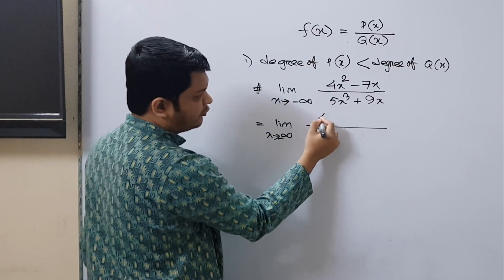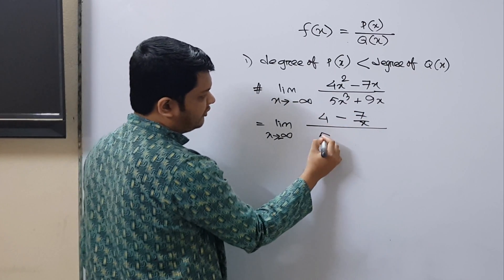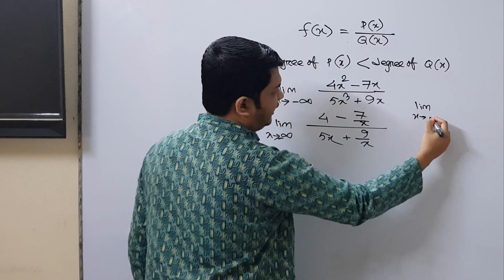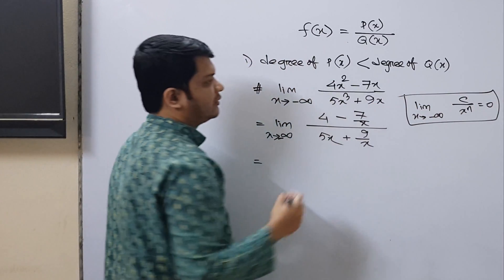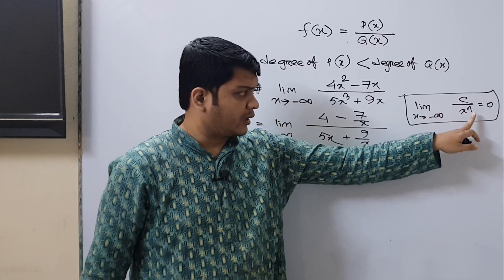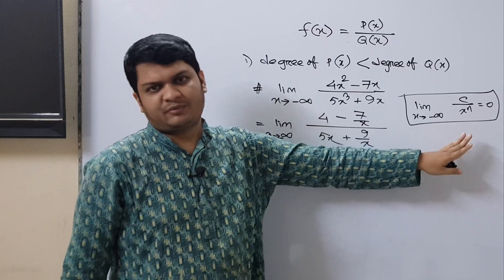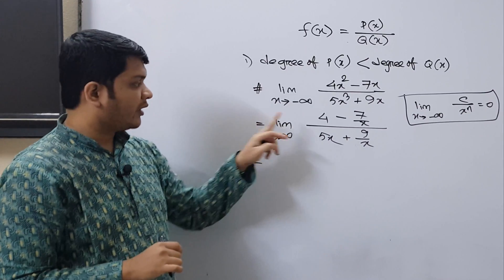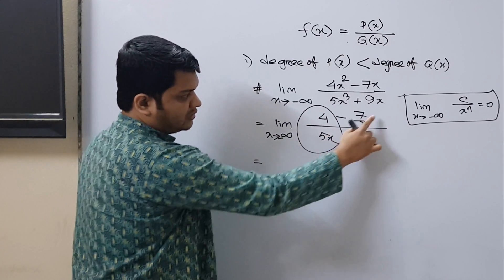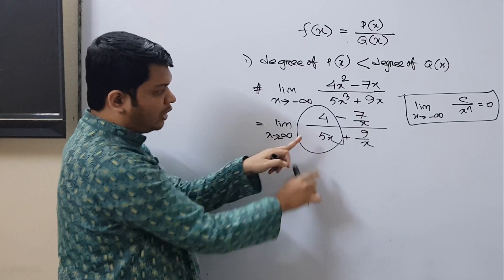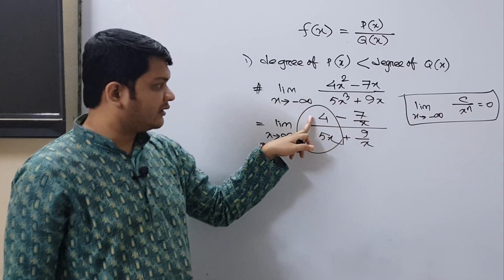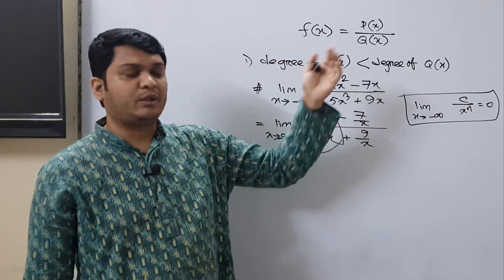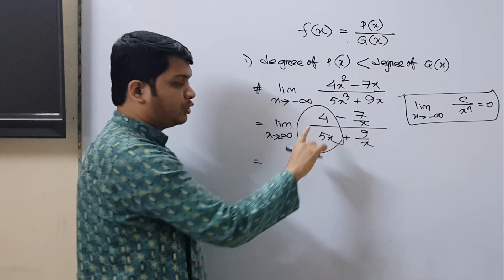Dividing 4x² by x² gives 4, minus 7x divided by x² gives -7/x. In the denominator, dividing 5x³ by x² gives 5x, plus 9x divided by x² gives 9/x. For the limit as x tends to negative infinity, c divided by x to the power n is still 0. So -7/x becomes 0 and 9/x becomes 0, leaving us with 4 divided by 5x. Since 4/5 is a constant and we have a positive power of x in the denominator, this also tends to 0.